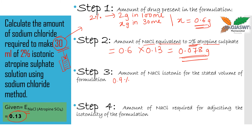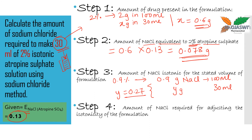Since 0.9% sodium chloride is isotonic, that means 0.9 grams of sodium chloride is present in 100 ml. By cross multiplication, the amount of sodium chloride that should be present in 30 ml comes out to be 0.27 grams. So ideally 0.27 grams of sodium chloride should be present in the 30 ml solution. The amount of sodium chloride required for adjusting the isotonicity is the difference of step 2 and step 3, which comes out to be 0.192 grams of sodium chloride to be added.